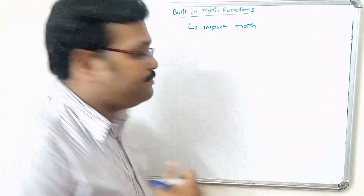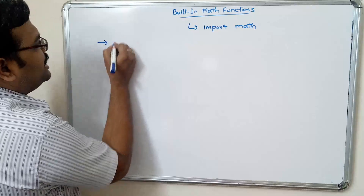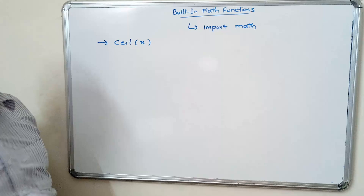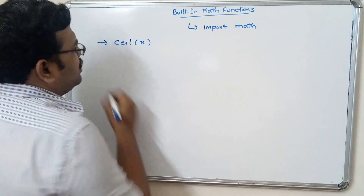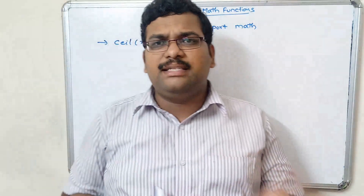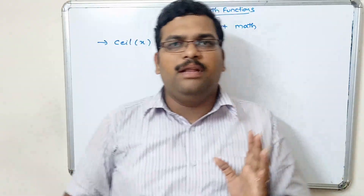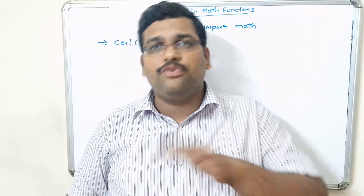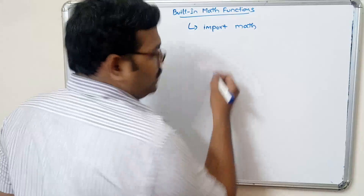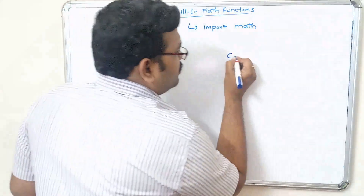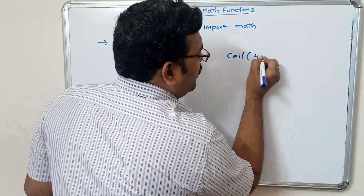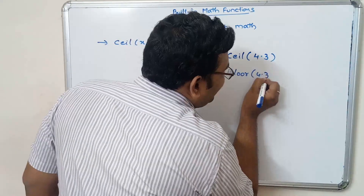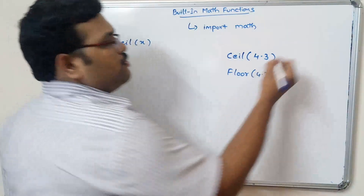The first function is the ceil function. As we know about flooring and ceiling — if there is any value, what is the ceil of that particular value and what is the floor of that particular value? Let me explain once again: ceil of 4.3, floor of 4.3.